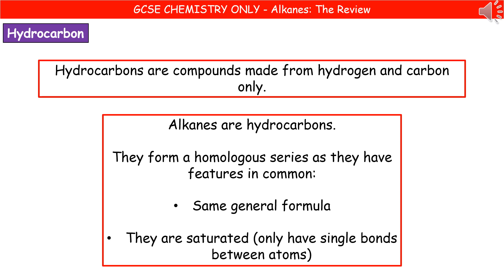Alkanes are a variety of hydrocarbon, and they form what's called a homologous series because they've got certain features in common. They share the same general formula and they're all saturated. When something is saturated, that means they only have single bonds between the atoms — no double bonds, only single bonds.